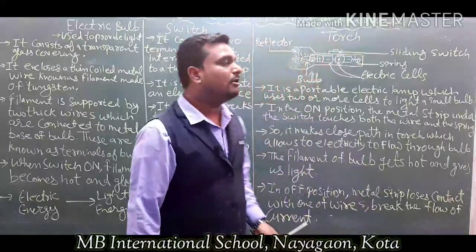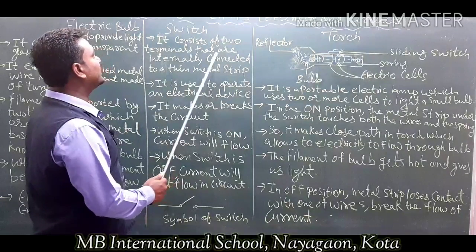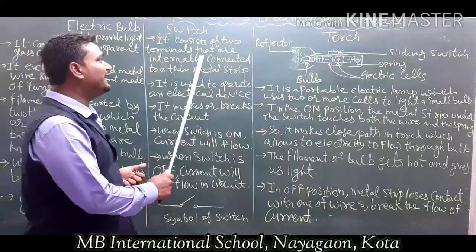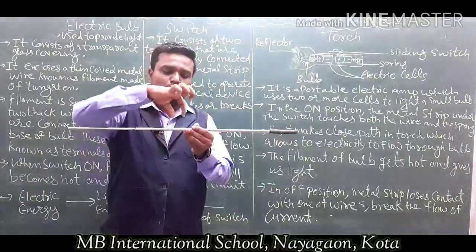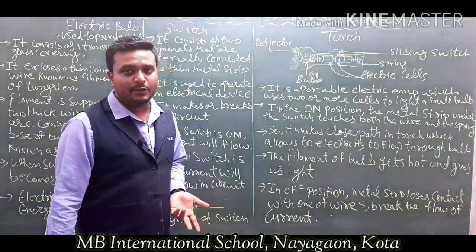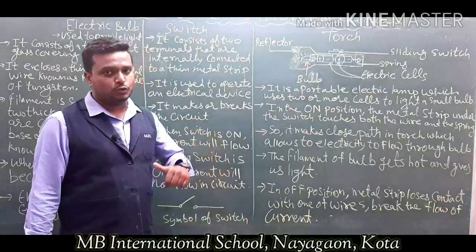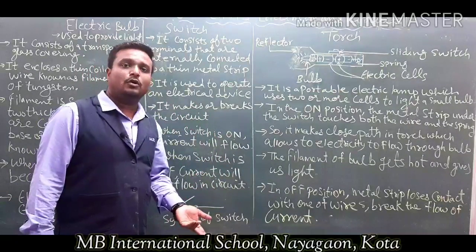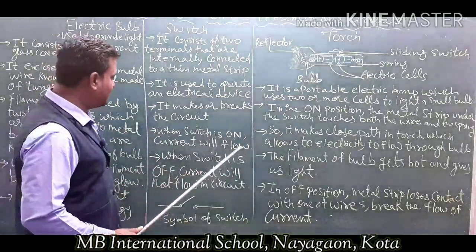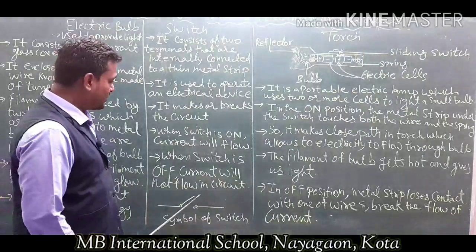Now, the next topic is the switch. A switch consists of two terminals that are internally connected to a thin metal strip. It is used to operate an electric device. It makes and breaks the circuit — open and close. When the switch is on, current will flow in the circuit. When the switch is off, current will not flow in the circuit.